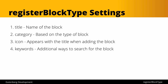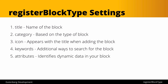Next are keywords — additional ways for someone to search for and find your block. By default only the block's name is searchable, but you can enter up to three keywords or phrases that will also surface your block in search. Then we have attributes, which identify all the dynamic data in your block — any editable parts need to be declared here. Attributes are actually one of the more clever pieces of engineering underneath the hood in how blocks work.